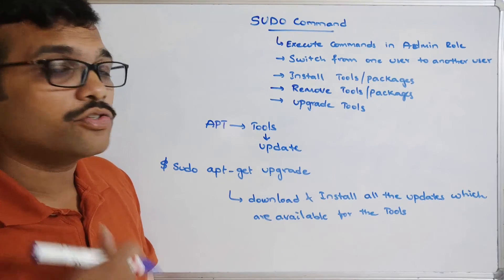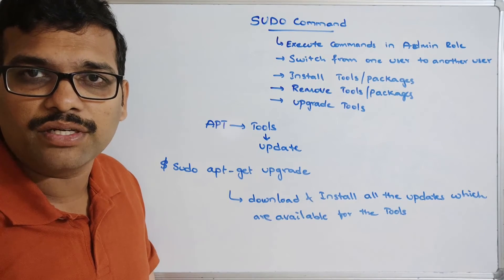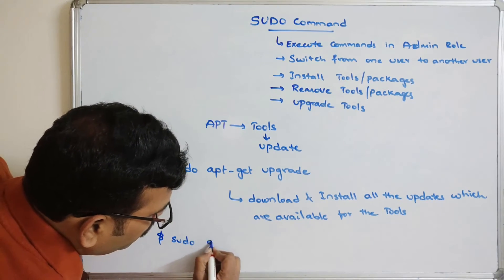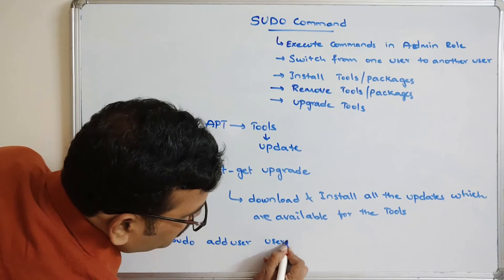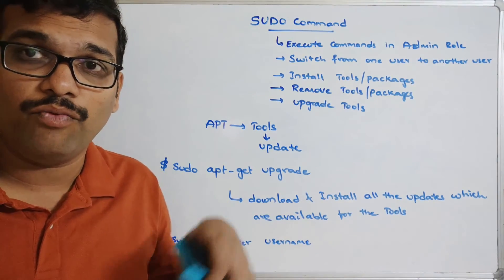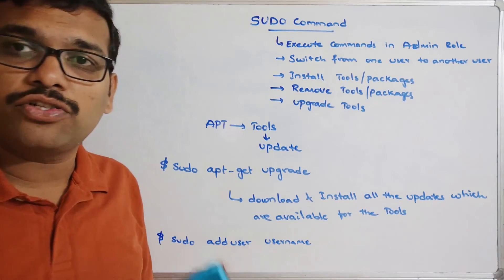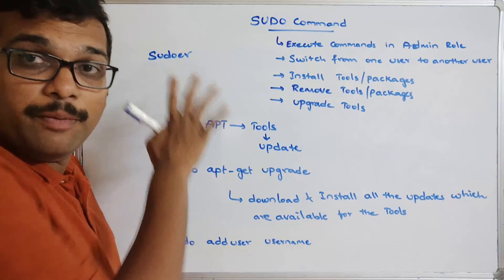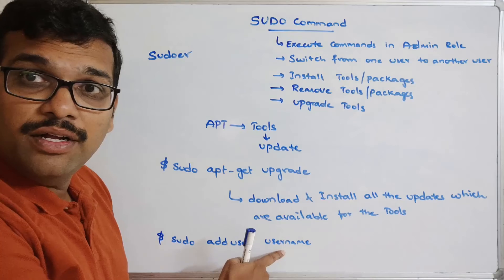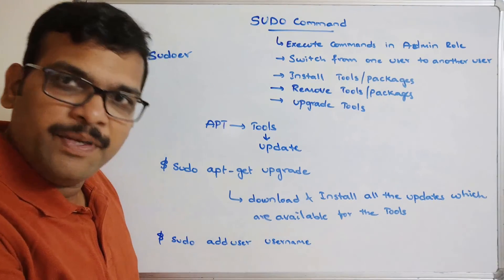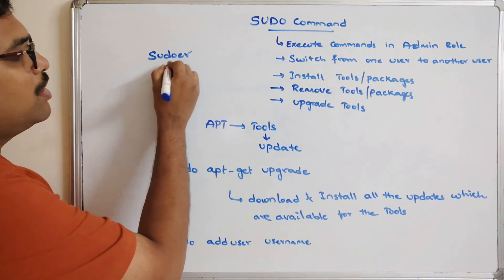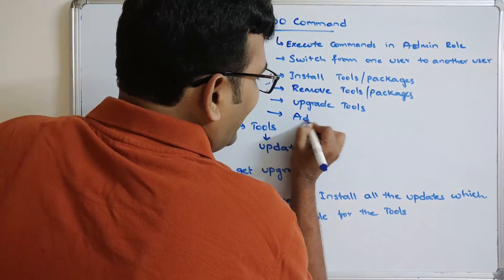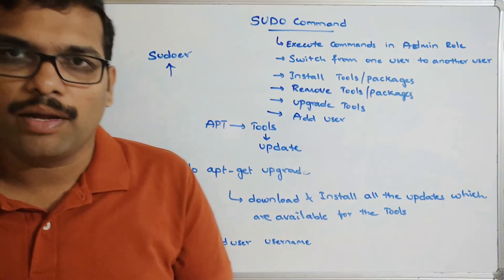Using the sudo command, we can also add new users. The command is: sudo adduser [username]. This will automatically create a new user. Note that this user is a normal user and doesn't belong to the sudo group, so they can't execute commands in administrative roles. To allow that, you need to add the username to the sudo group.